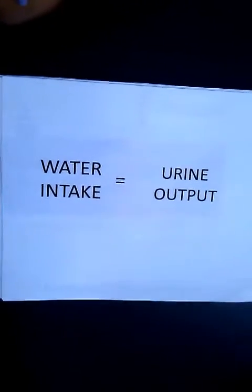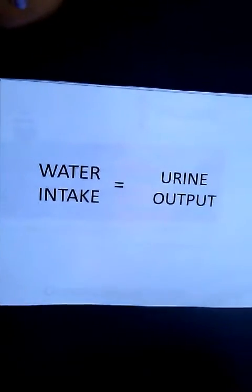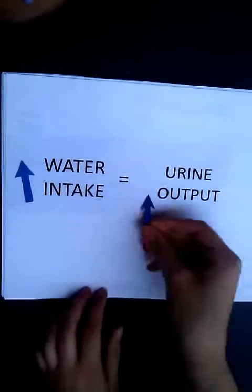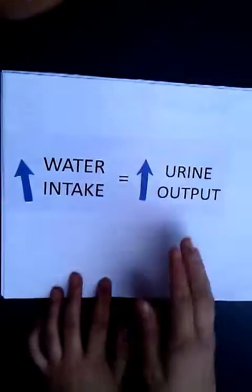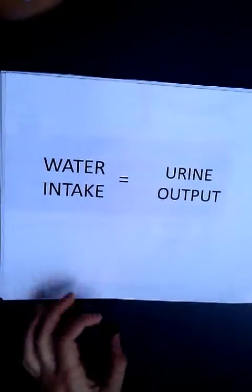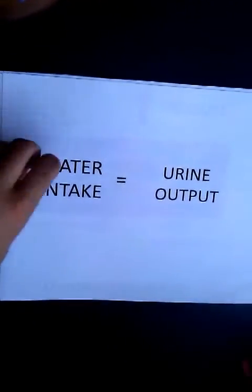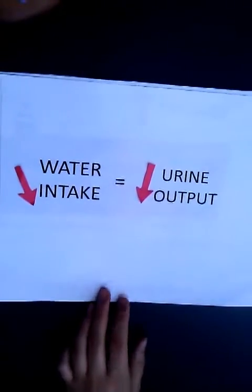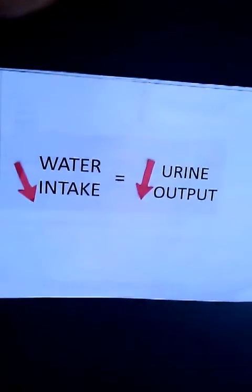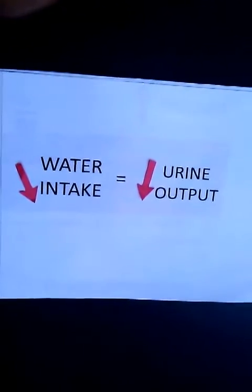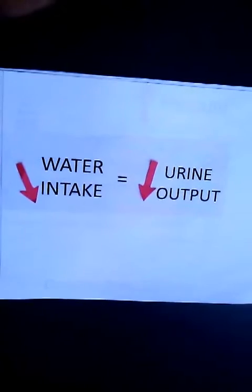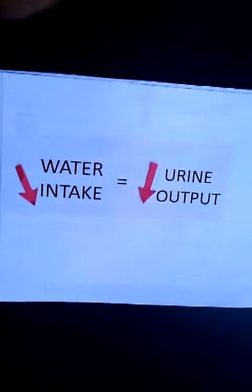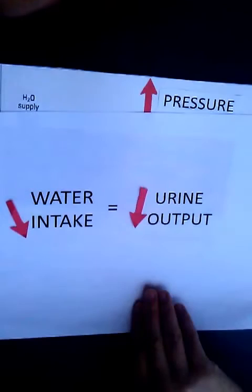Our bodies adjust for increased water intake by increasing urine output. Conversely, when water intake decreases, urine output also decreases. The kidneys are one of the body's major homeostatic devices, as they are responsible for regulating blood water levels as well as reabsorption of substances into the blood.